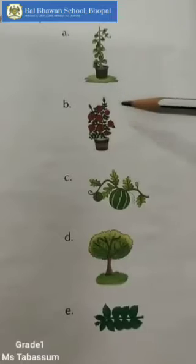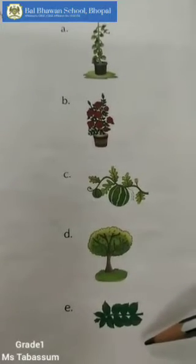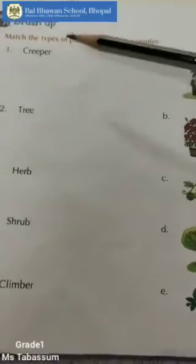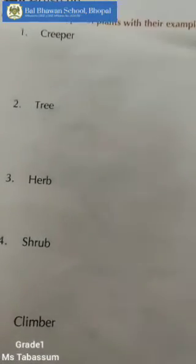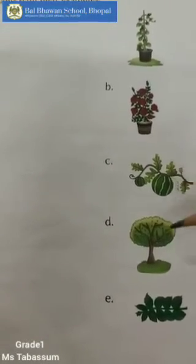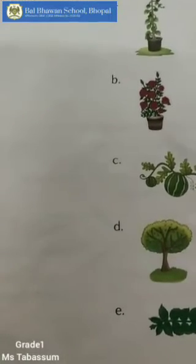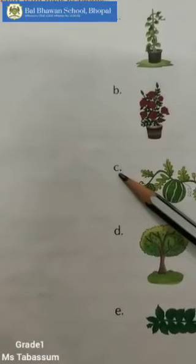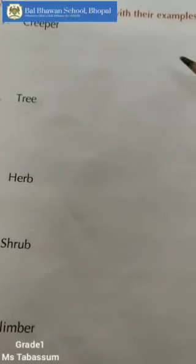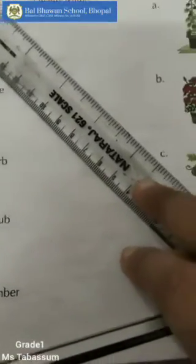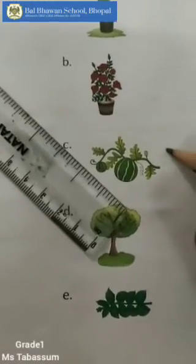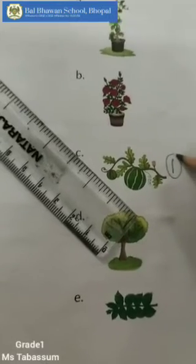In this column, they have given the examples. We are going to match the types of plants with the examples. First one is creeper. You have to identify the example. Creeper matches with letter C. You can draw a line with the help of a scale, or you can write number 1 and encircle it.